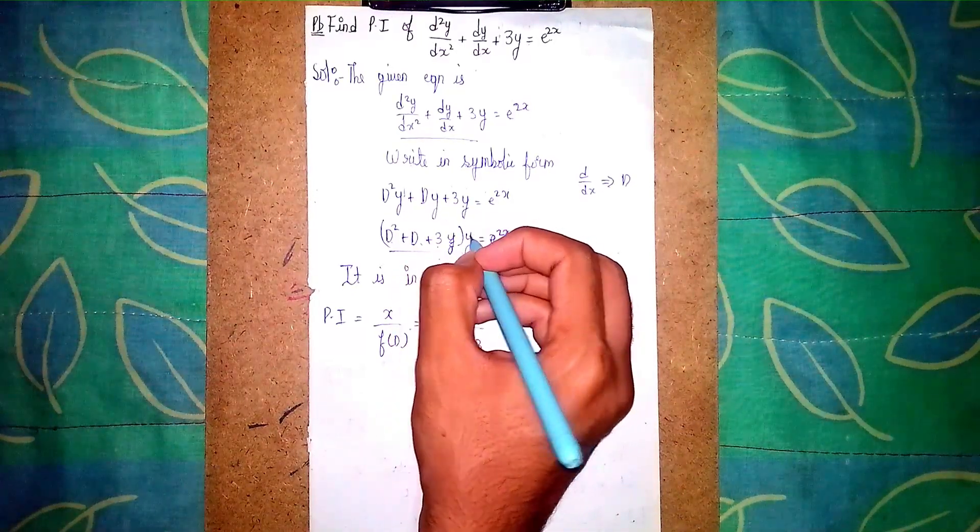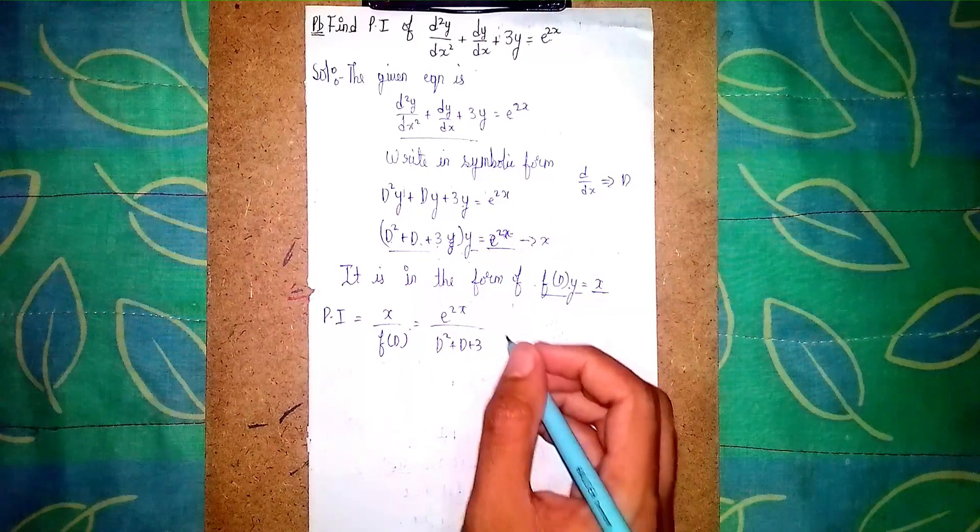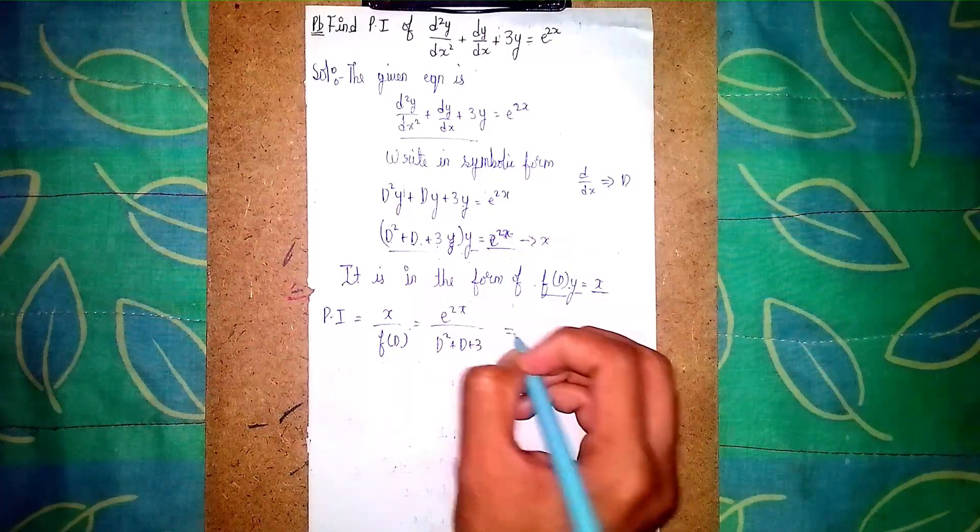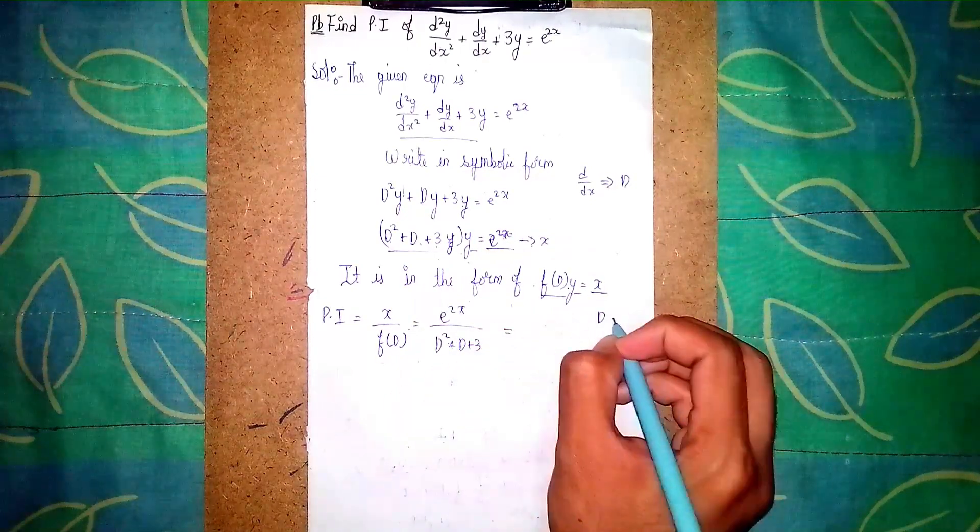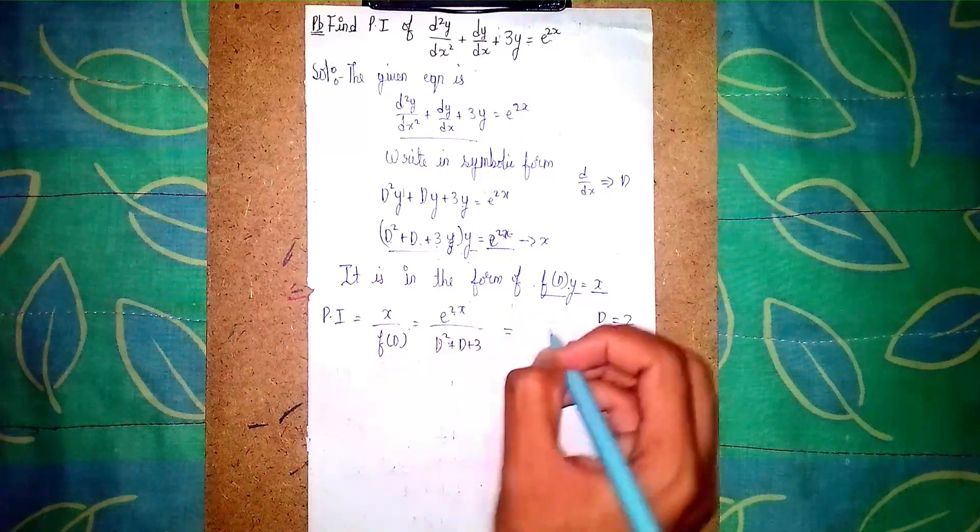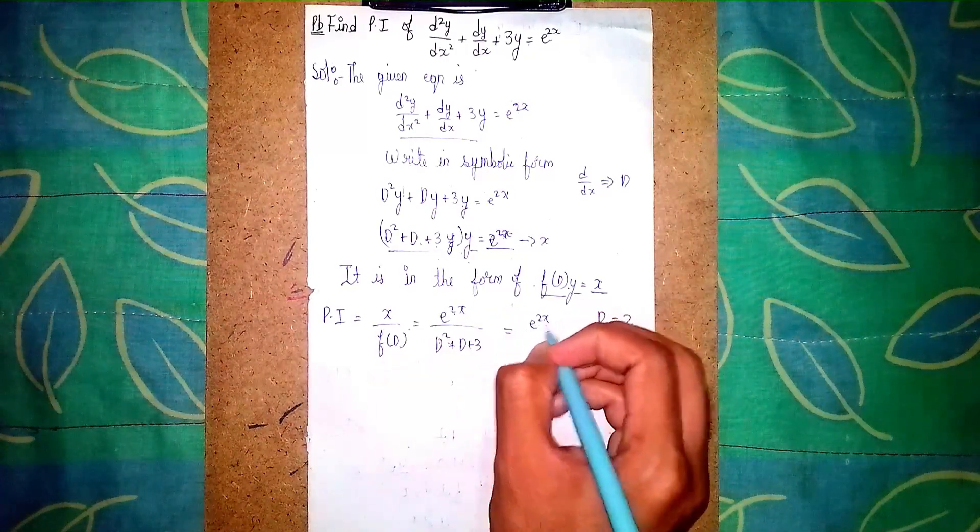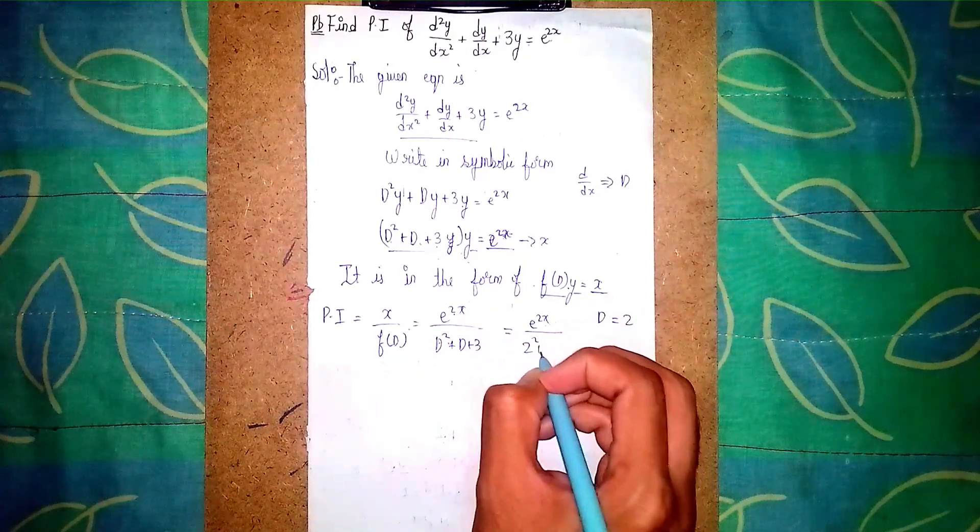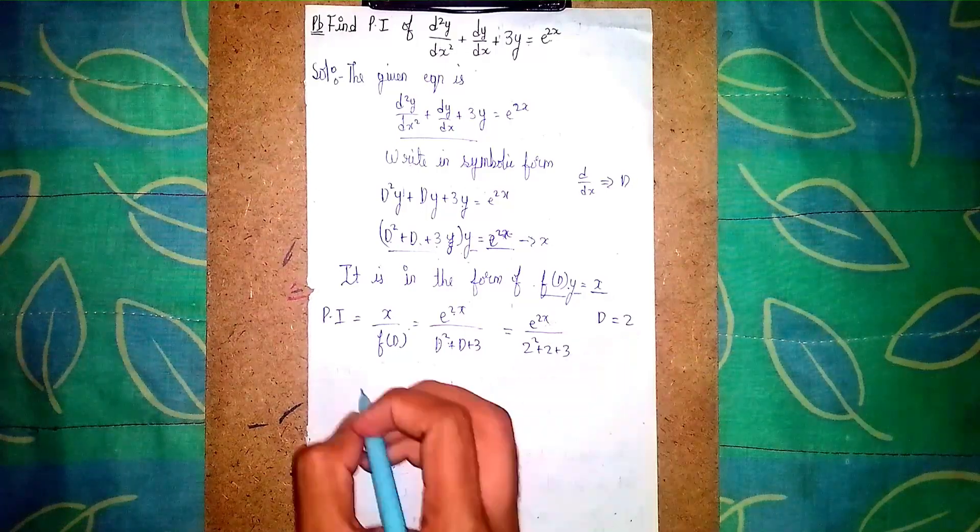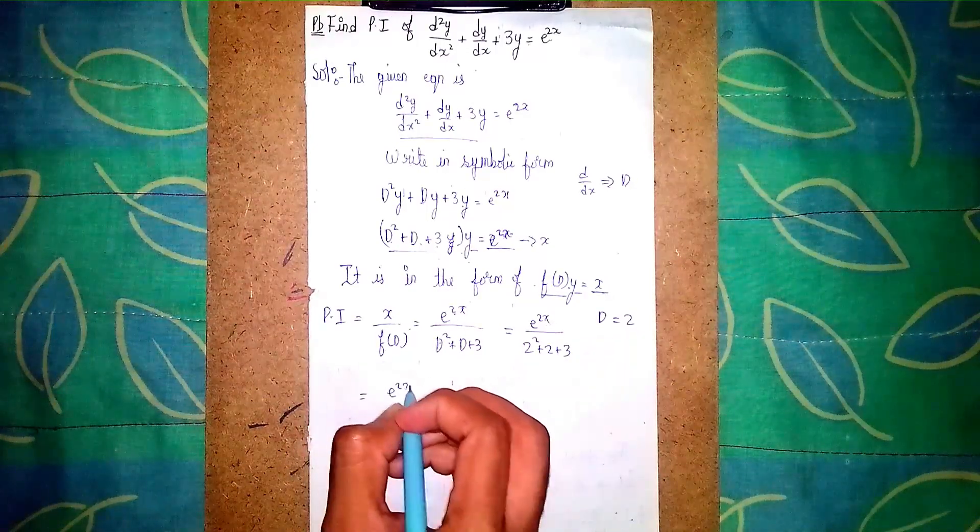Now instead of D, substitute 2 here. So e^(2x) / (2² + 2 + 3). So our answer is e^(2x) / (4 + 2 + 3).